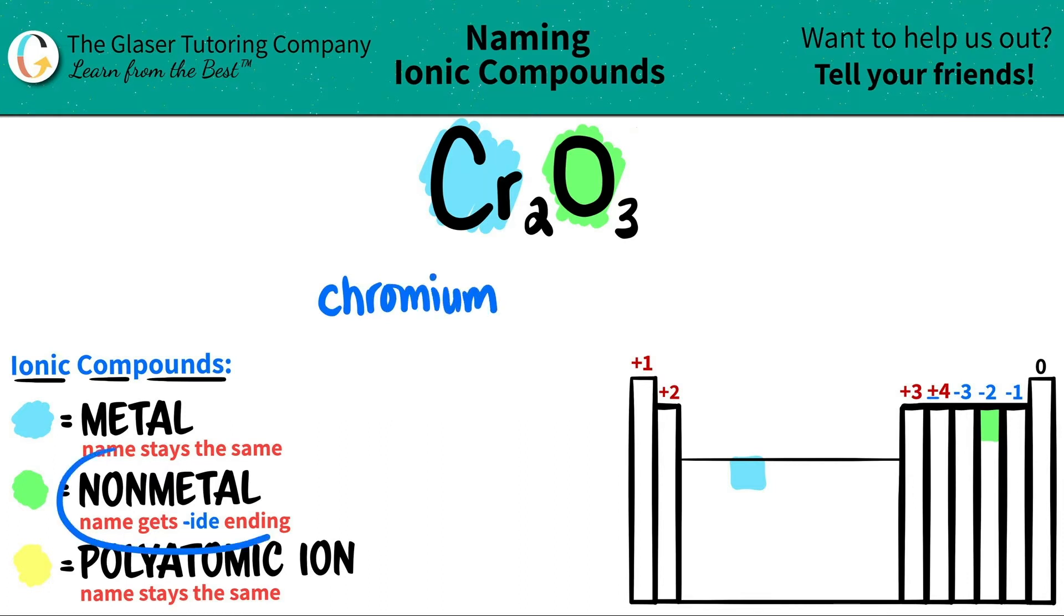And then comes the nonmetal. The nonmetal always gets the -ide ending when we're doing ionic compounds. So it won't be oxygen anymore. It would be oxide. You have to get rid of this Y-G-E-N and put I-D-E.